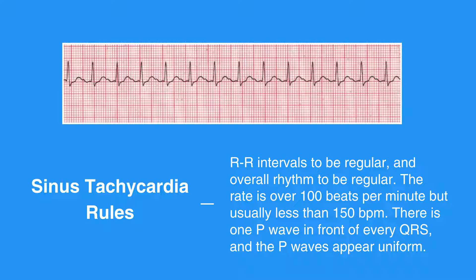The PR interval measures between 0.12 to 0.20 seconds in duration, and it is consistent. The QRS complex measures less than 0.12 seconds.